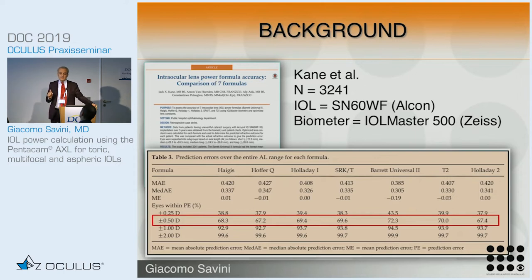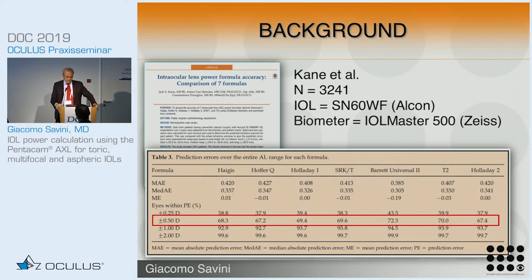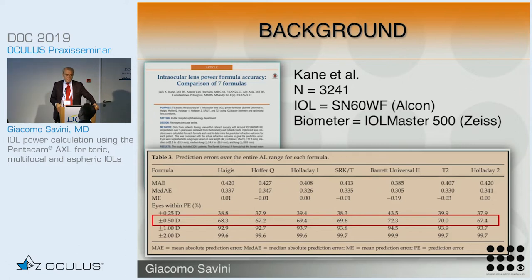The first one was published in 2016 by Jack Kane, a young Australian resident just 26 years old, who was able to collect as many as 3,200 IOLs with the same model, the Alcon SN60WF, and made a comparison between different formulas. All measurements were made with the IOL Master 500.